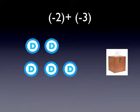Here is our first problem: minus two plus minus three. We will be using the model as mentioned. Two Democrats arrived to vote. Later on, three other men of the same party arrived and cast their votes along with the rest.